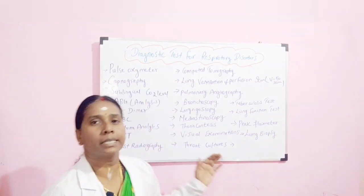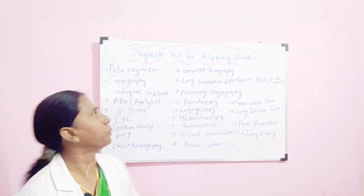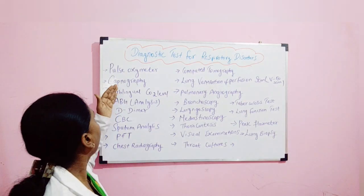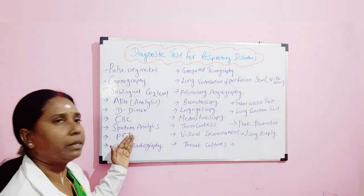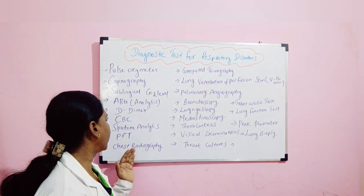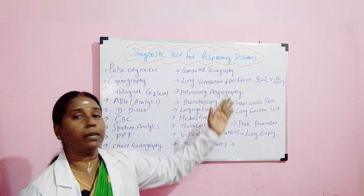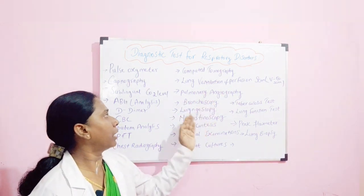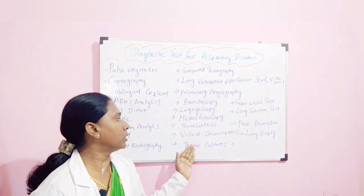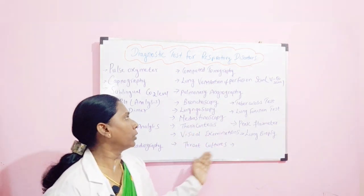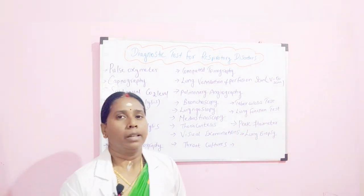In this class we have discussed the diagnostic procedures related to the respiratory system, which include: pulse oximeter, capnography, sublingual carbon dioxide level, ABG analysis, D-dimer, CBC, sputum analysis, pulmonary function test, chest radiography, computed tomography, lung ventilation and perfusion scan, pulmonary angiography, bronchoscopy, laryngoscopy, mediastinoscopy, thoracentesis, visual examinations, throat cultures, tuberculosis test, lung function test, peak flow meter, and lung biopsies.